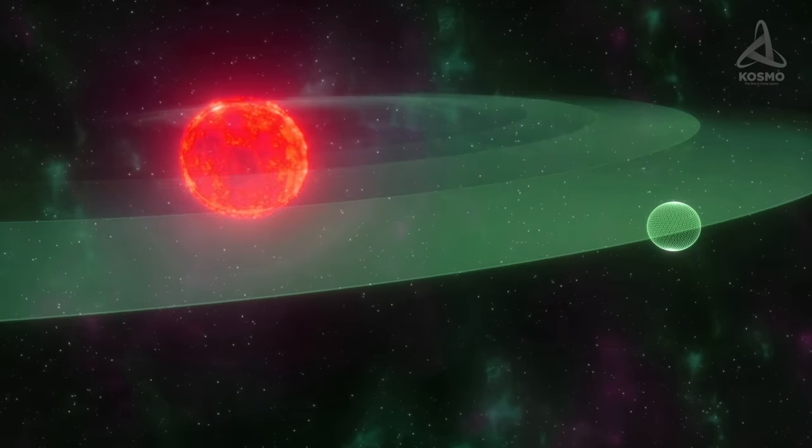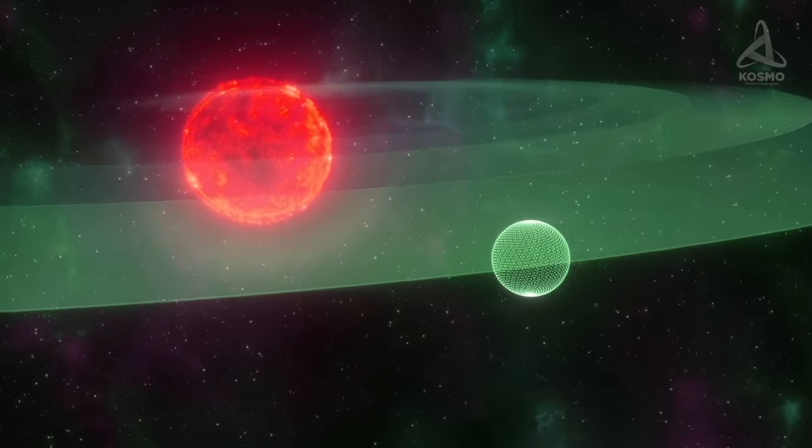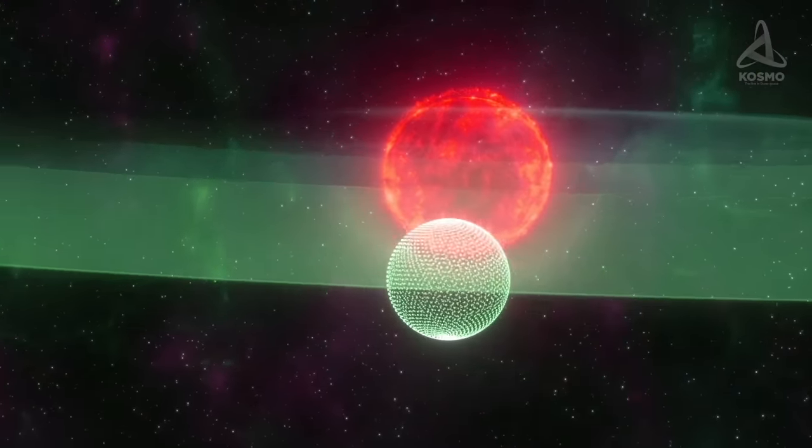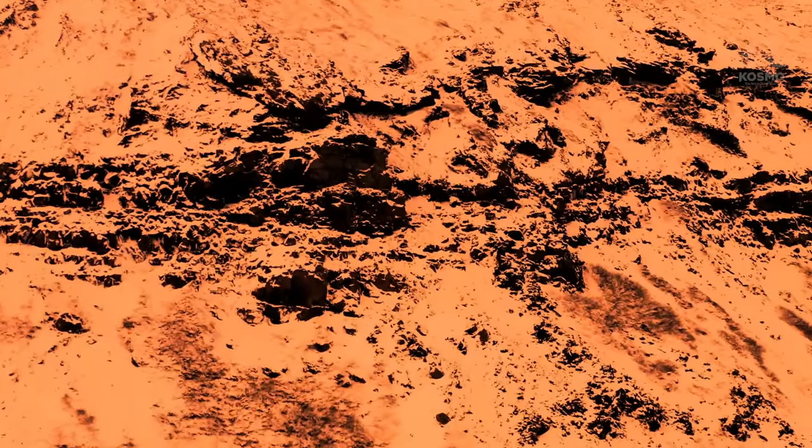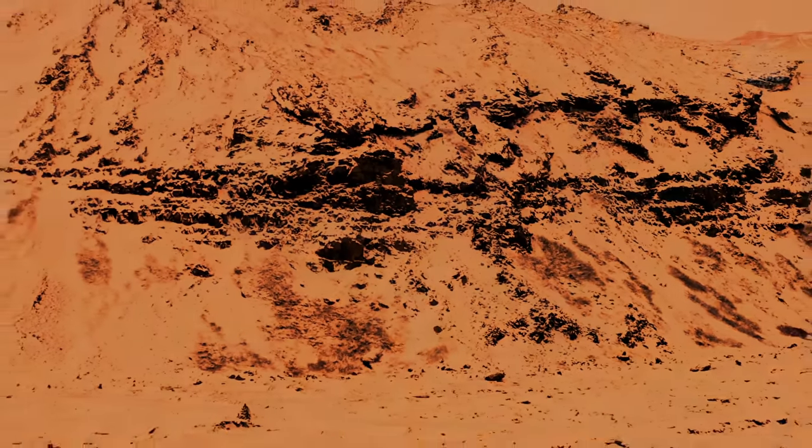Its orbit's eccentricity is rather high, with the planet regularly leaving the habitable zone and then re-entering it. This must cause sharp temperature leaps and drops on its surface.